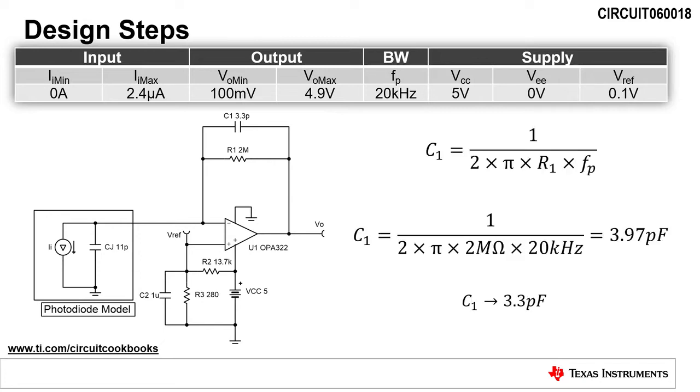The next step is to calculate the feedback capacitor, C1, to meet the circuit bandwidth goal. C1 is calculated to be 3.97 picofarads with the equation given on the slide. The next closest standard capacitor value is 3.3 picofarads, so we will use this value for the design as shown by C1 in the schematic.